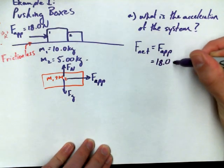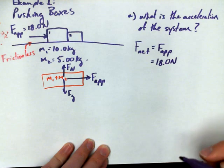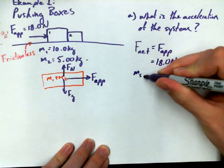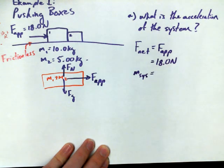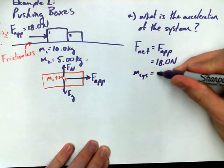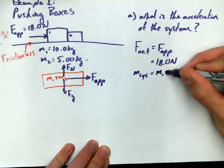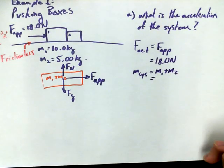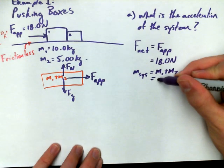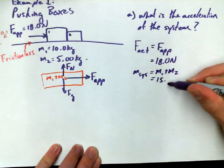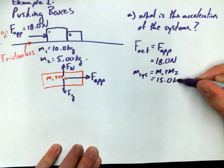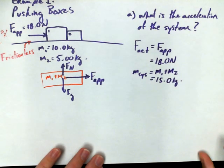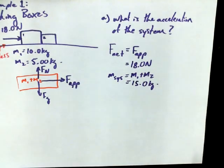Remember, a free body diagram can always help you to yield an F_net equation. In this case, it's the simplest of equations. F_net is equal to F_applied, or F_net is equal to 18.0 newtons. Now, the mass of the system is going to be M1 plus M2, but we'll put it over here in the problem-solving area. M_sys, M_system, is equal to M1 plus M2. I've chosen some nice round numbers, 10 kilograms and 5 kilograms. I'm just going to add them up in my head and I end up getting 15.0 kilograms.